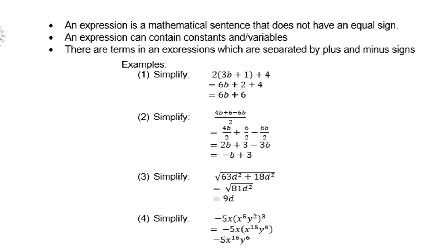For instance, the square root of 63d² + 18d². Well, we can add 63 and 18 because they are like terms, and we get 81. And the square root of 81 is 9, square root of d² is d.